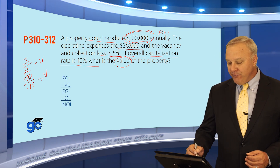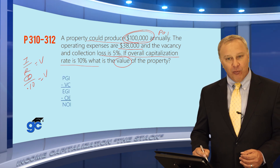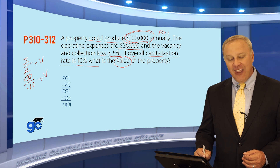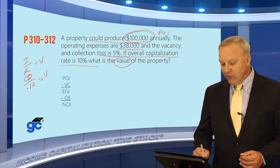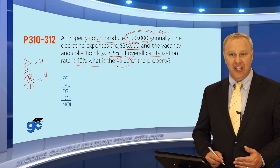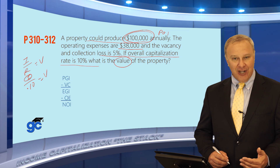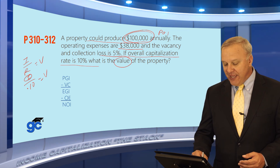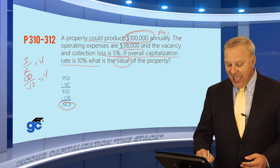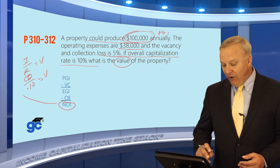The stack formula is PGI (potential gross income) minus vacancy and collection losses, which equals EGI, or effective gross income. We then take out operating expenses, and we're left with the NOI. The NOI is going to be the I in the IRV formula in order to solve this problem.